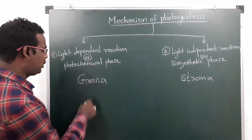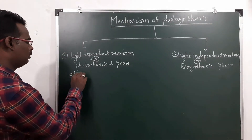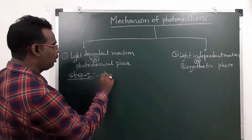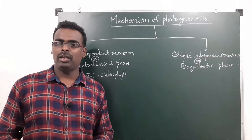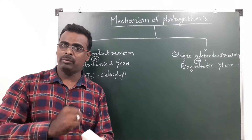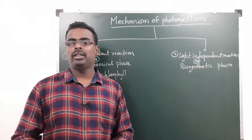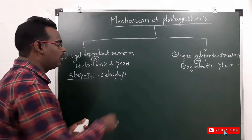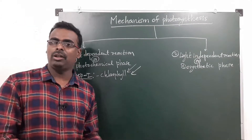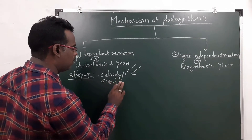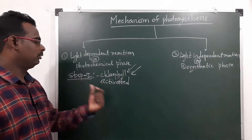In the light dependent reaction, there are three steps. In step one, chlorophyll molecules absorb light energy — that means photons — from the sunlight. The chlorophyll becomes activated by absorbing the sunlight energy.